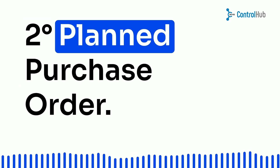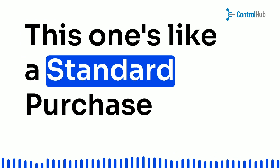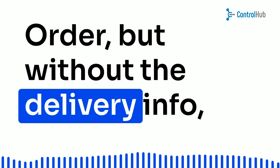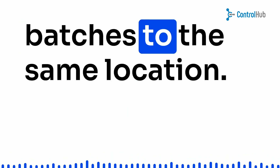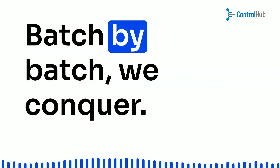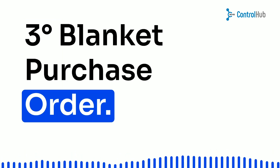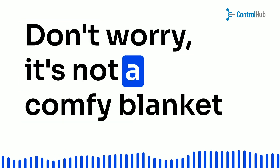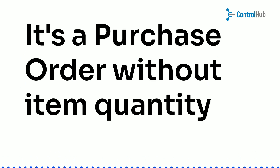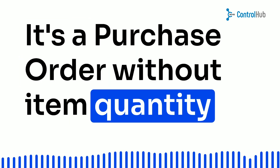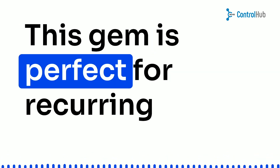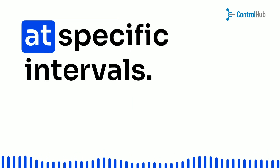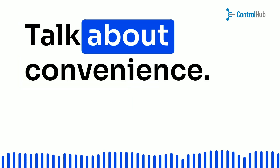Second, the planned purchase order. This one's like a standard purchase order but without the delivery info. It's great for orders that will be delivered in batches to the same location. Third, the blanket purchase order. It's a purchase order without item quantity or price information — perfect for recurring orders delivered at specific intervals.